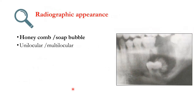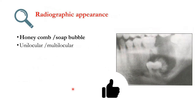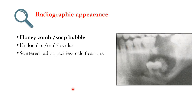Radiographically, CEOT can be unilocular or multilocular. When multilocular, it can look like a honeycomb or soap bubble appearance depending on the size of the locules. Within this radiolucency, there are scattered radio-opacities, which are nothing but calcifications — hence the name calcifying epithelial odontogenic tumor.